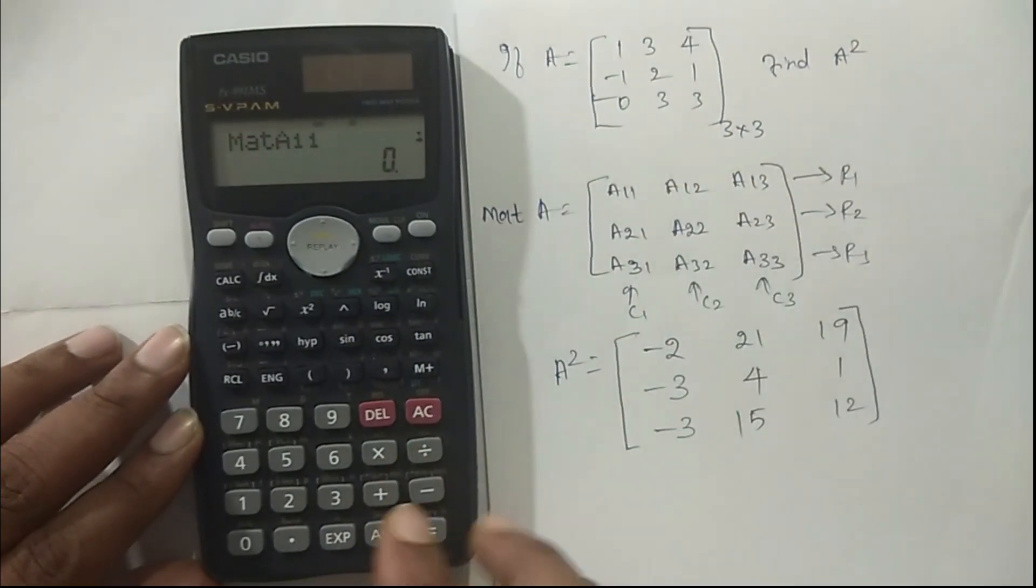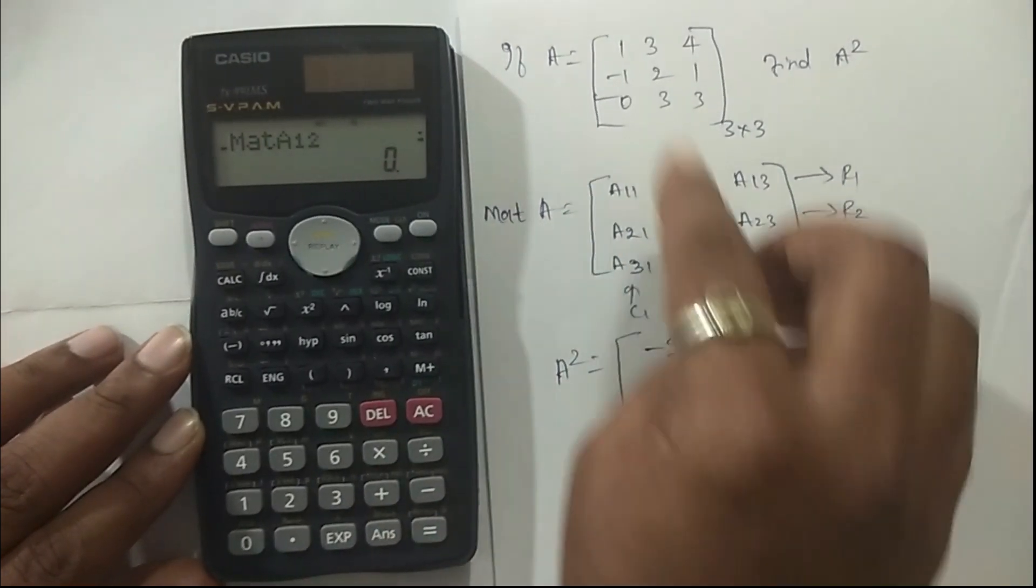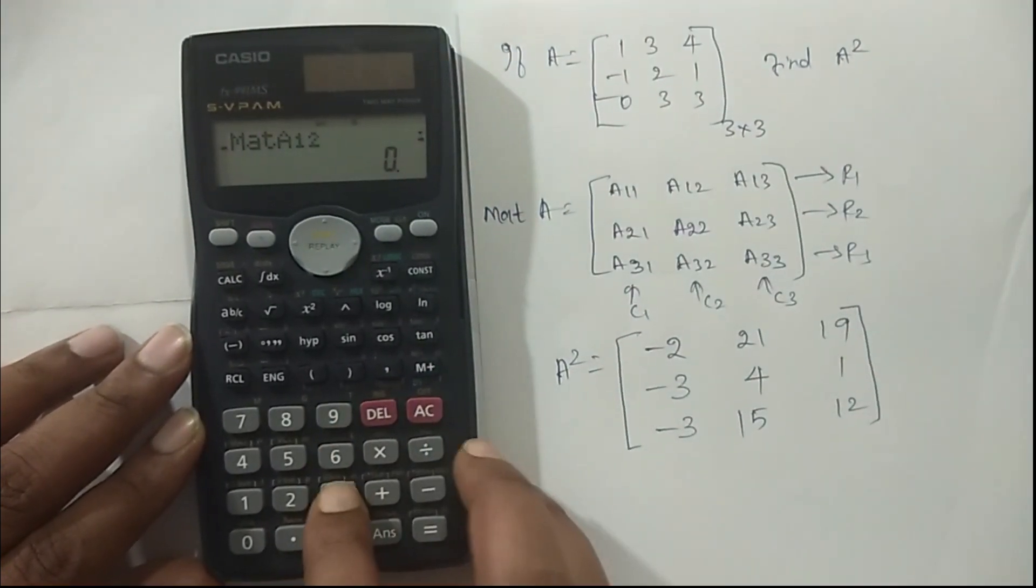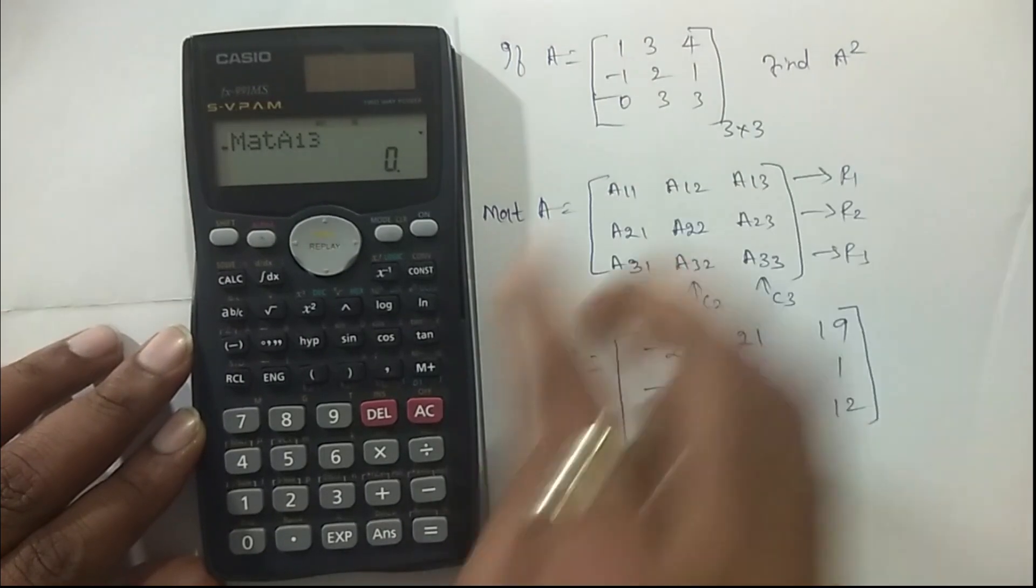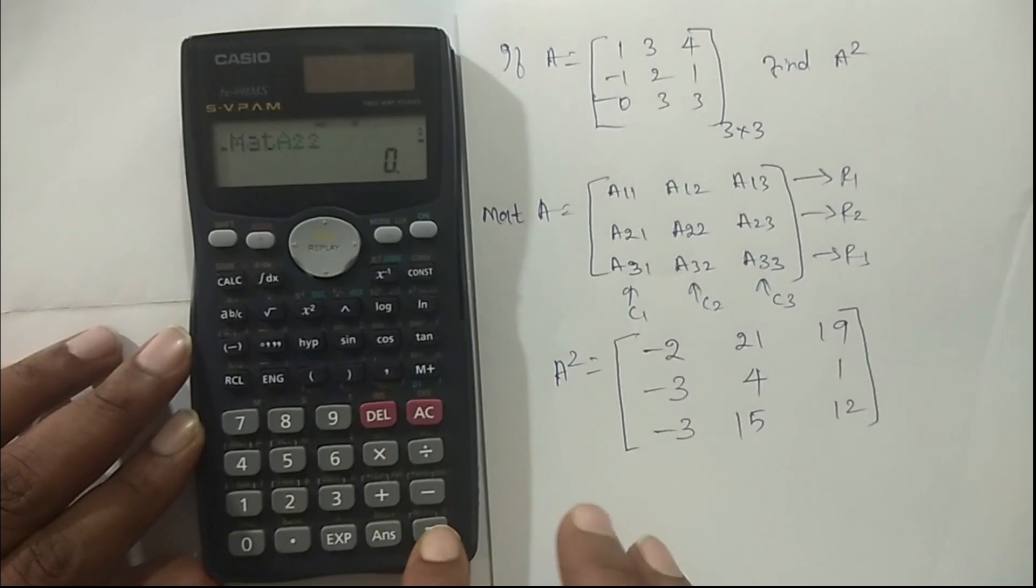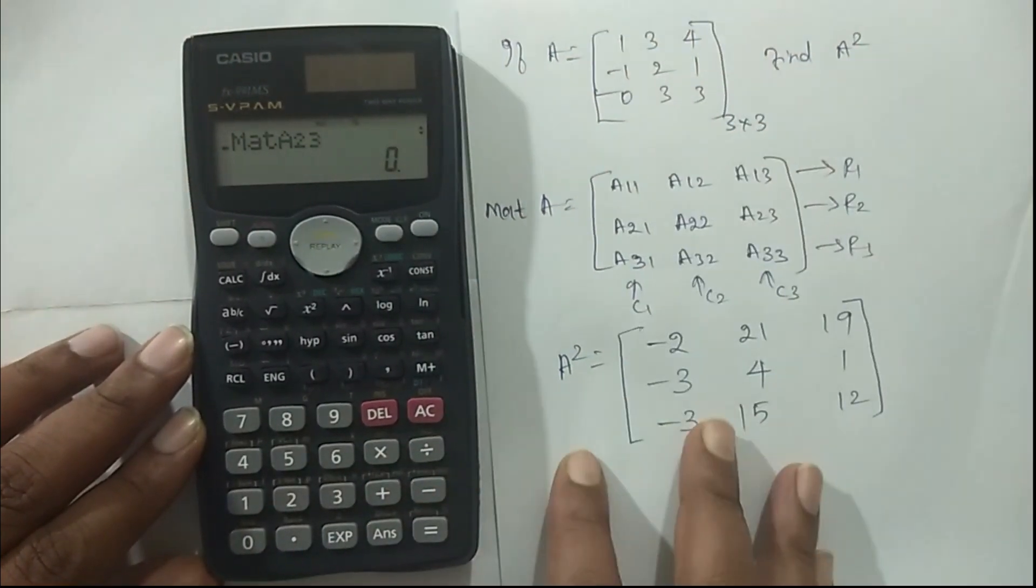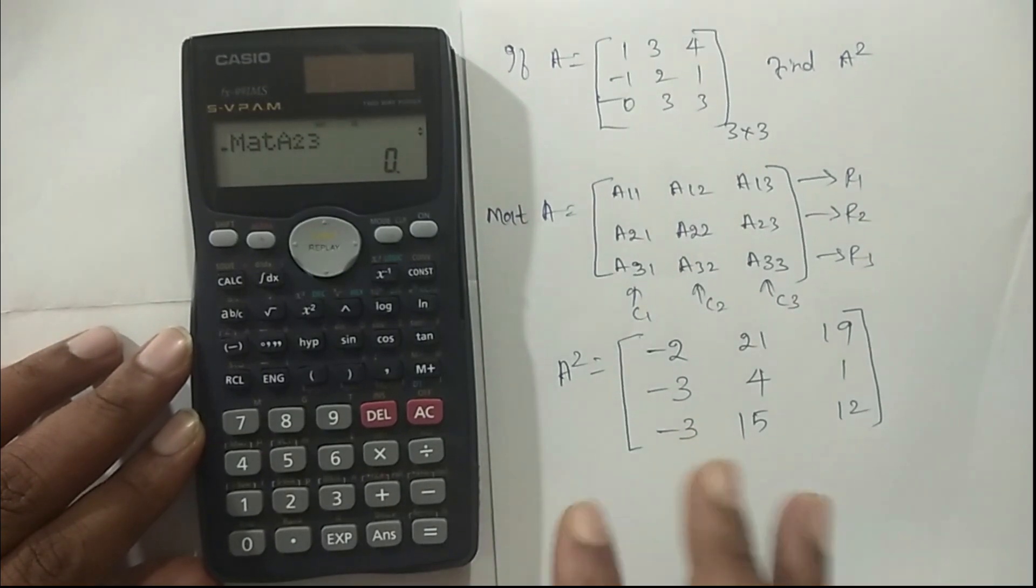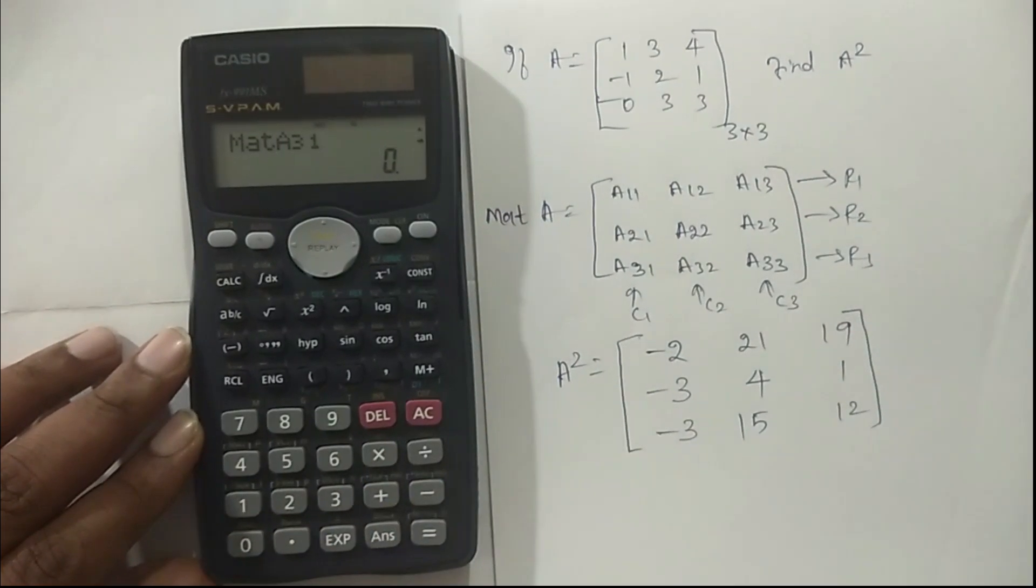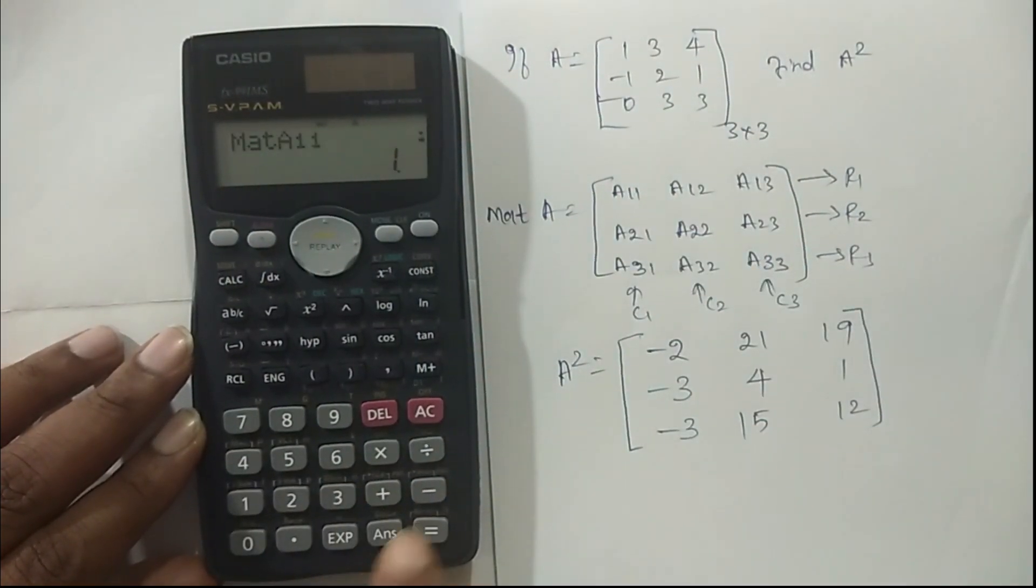Now it is matrix A. It is asking for m into n - m is rows and n is columns. So enter row dimension first. Enter A11 which is 1. A12 is 3, and A13 is 4. Similarly, A21 is minus 1, A22 is 2, and A23 is 1. A31 is 0, A32 is 3, and A33 is 3.